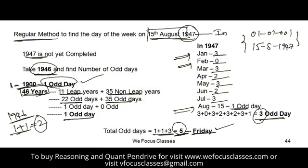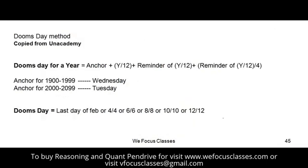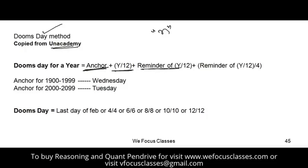This regular method can be done in 45 seconds with practice. But if you need a shortcut, the Doomsday method is one option. In this method, you divide the given year by 12, take the quotient, take the remainder, and then divide the remainder by 4. These three values are added to the anchor day.